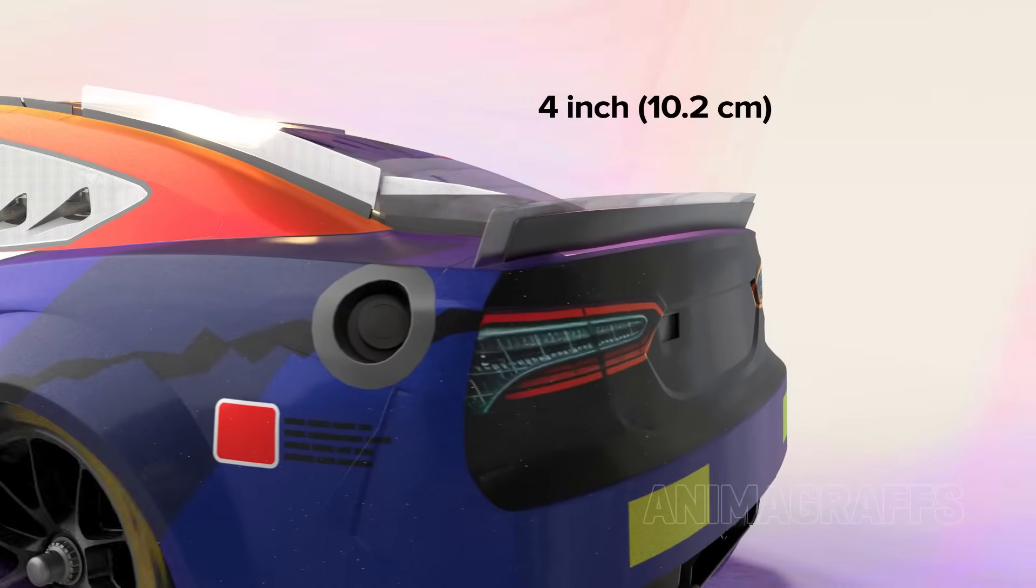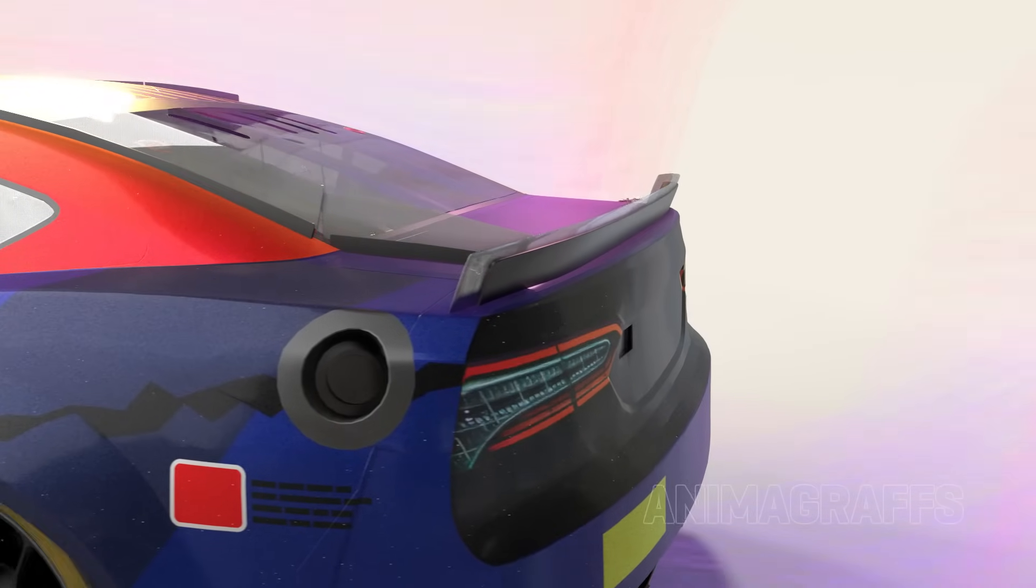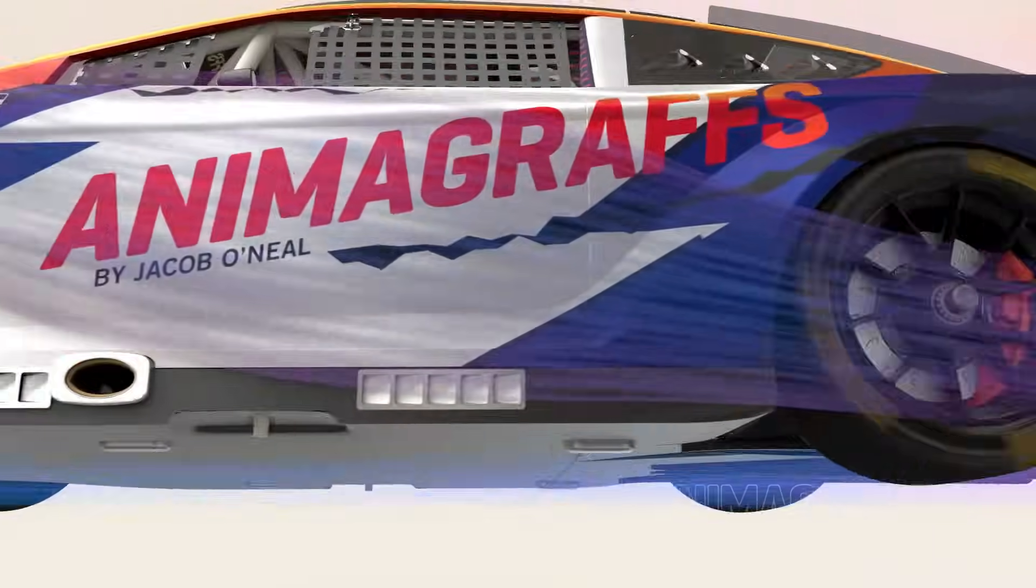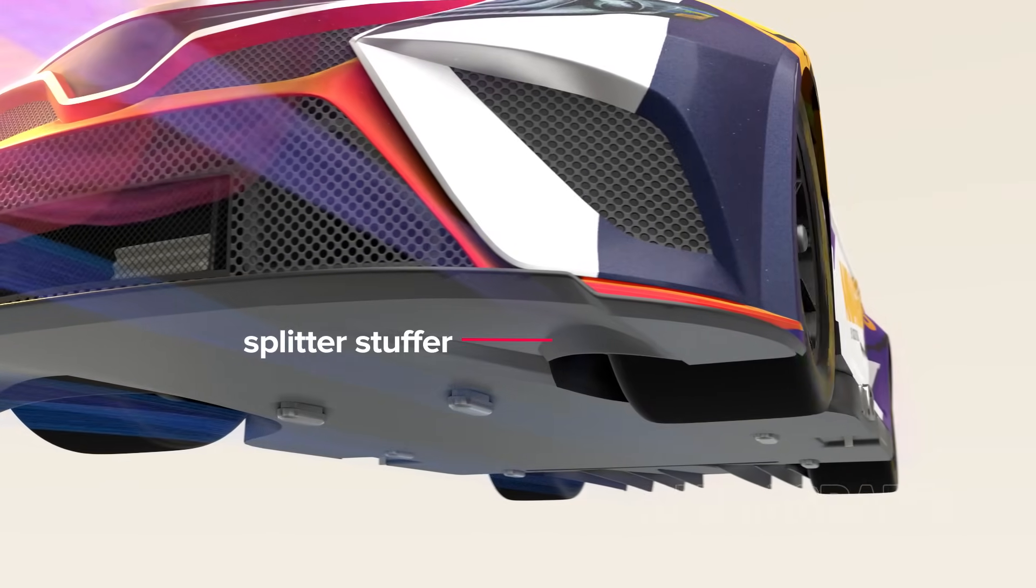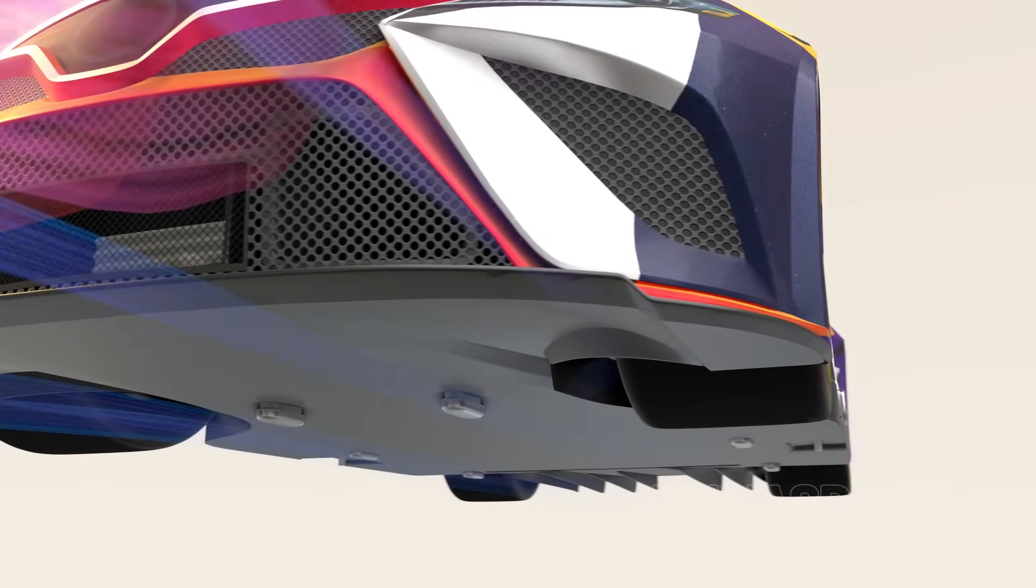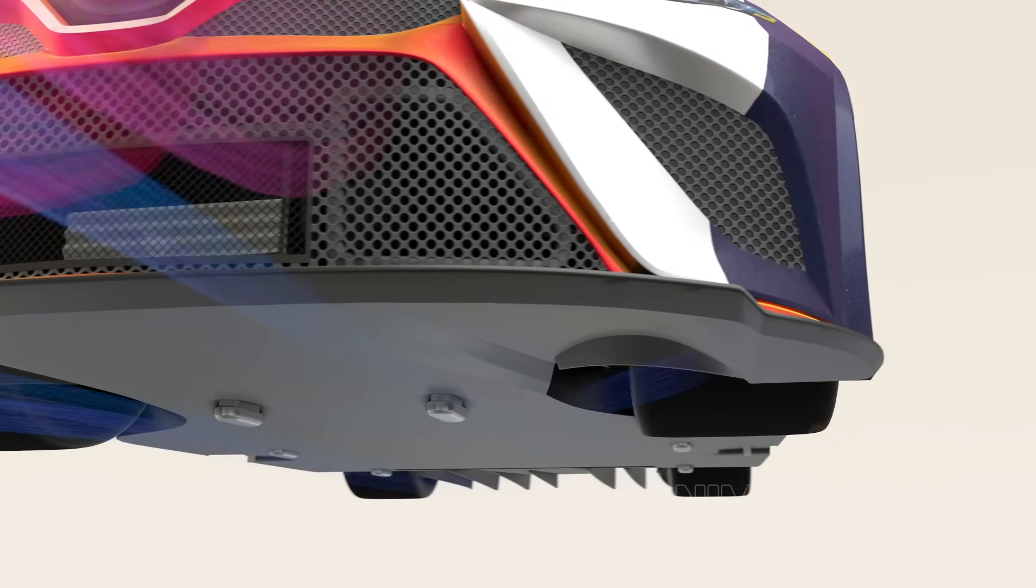A shorter 4-inch spoiler is used for road, short, and intermediate courses. Splitter-stuffers may also be required to reduce overall speed by interrupting the amount of air allowed underneath the vehicle, limiting downforce.